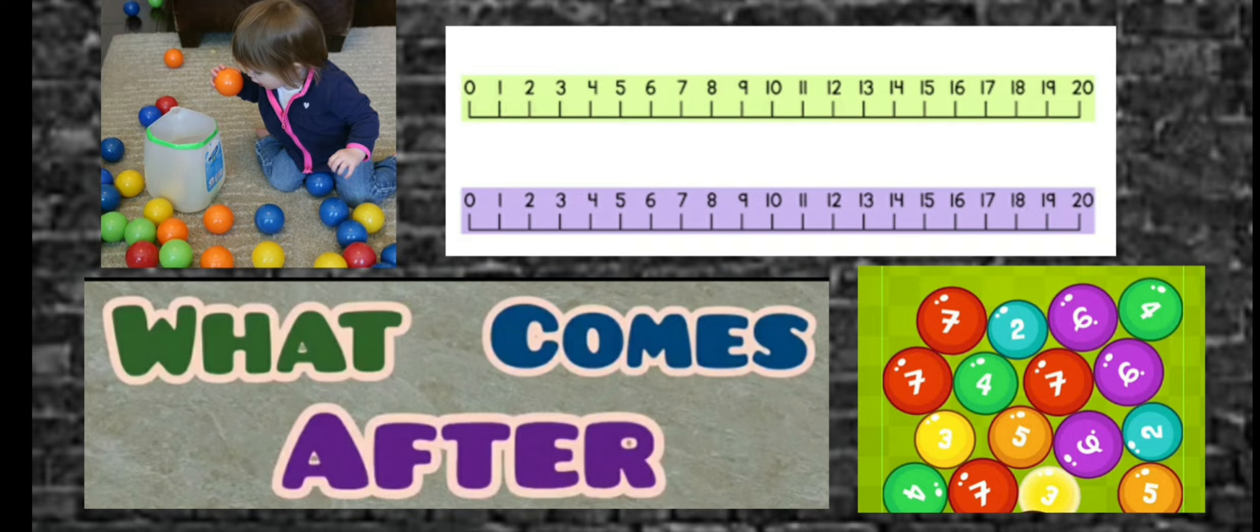The topic for today is what comes after. Now you all know numbers from 0 to 20. Now you can identify them, count objects and also you know their values. So let's first understand how to tell what comes after. All numbers have a special position and also they follow a special order.